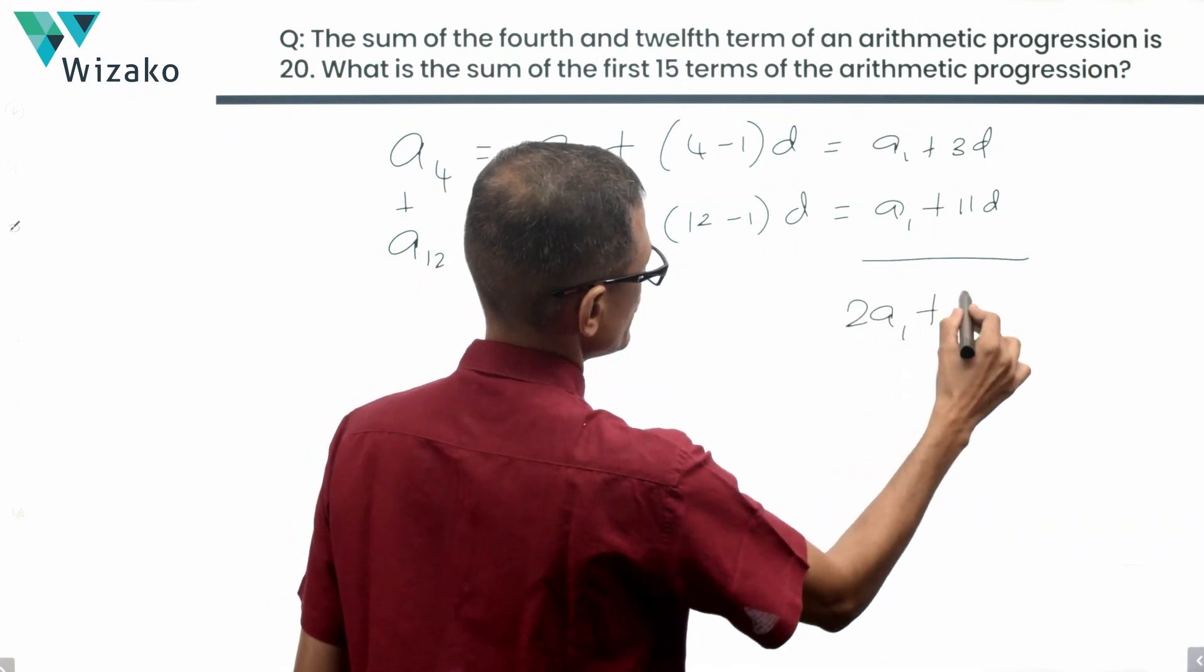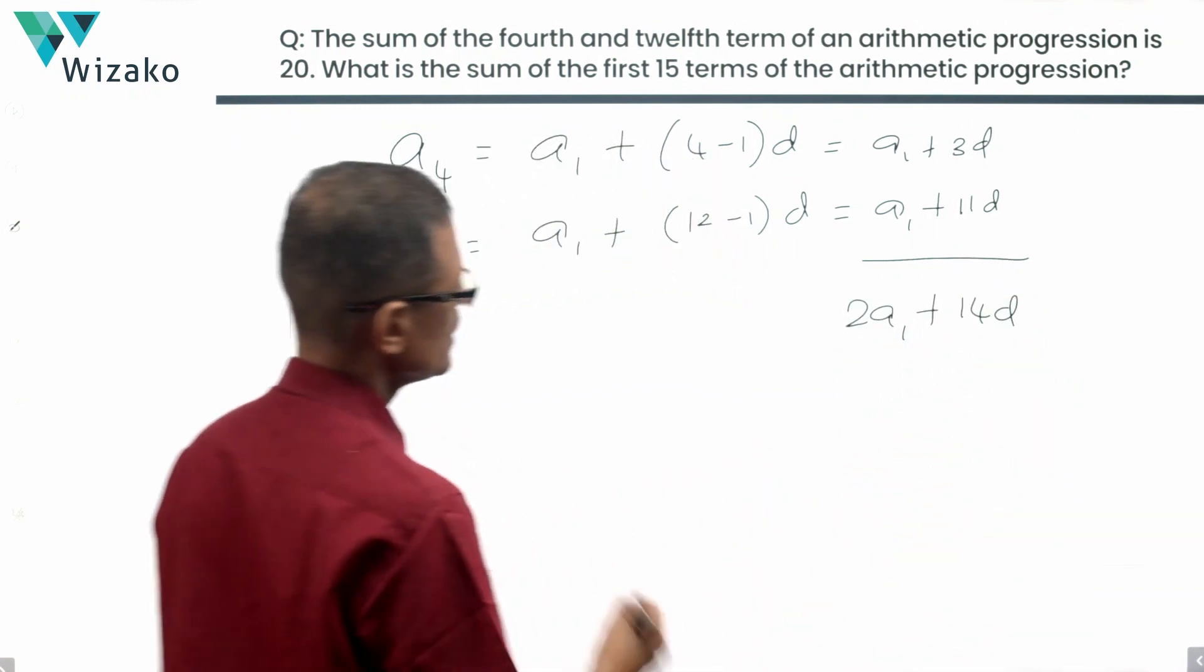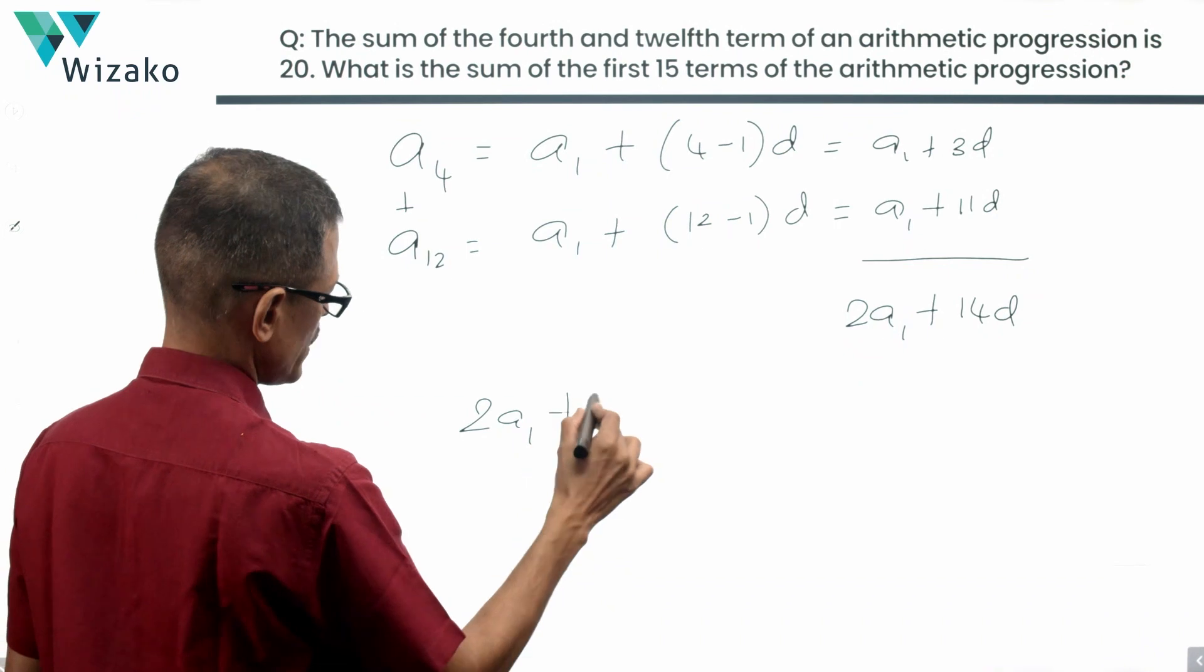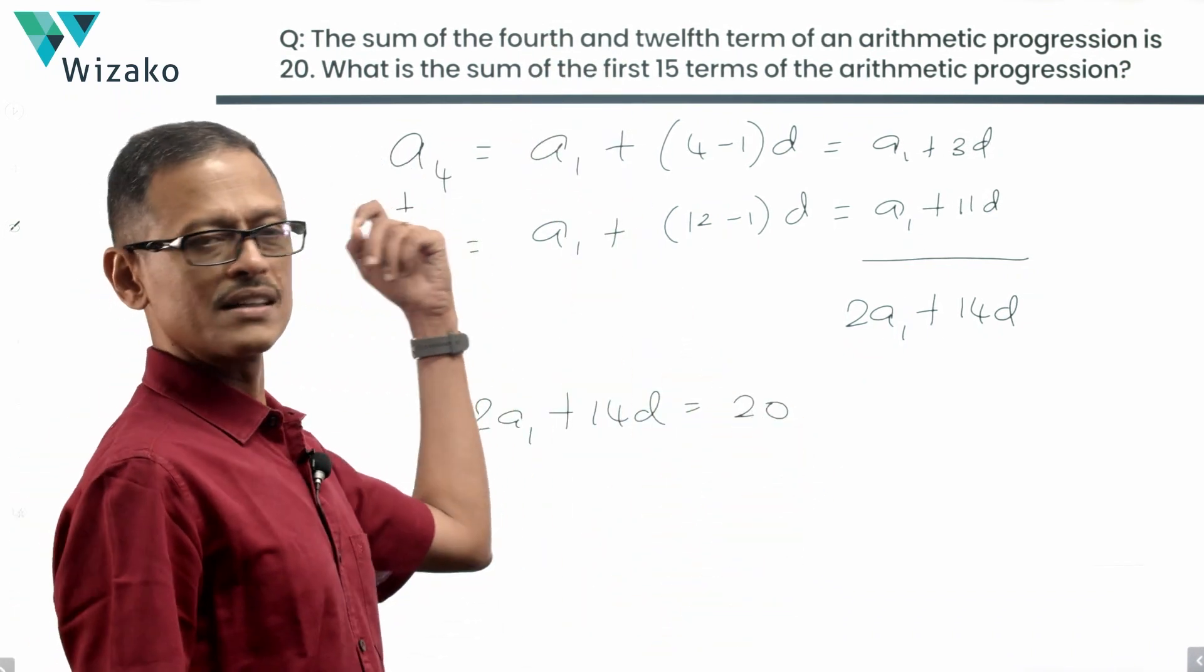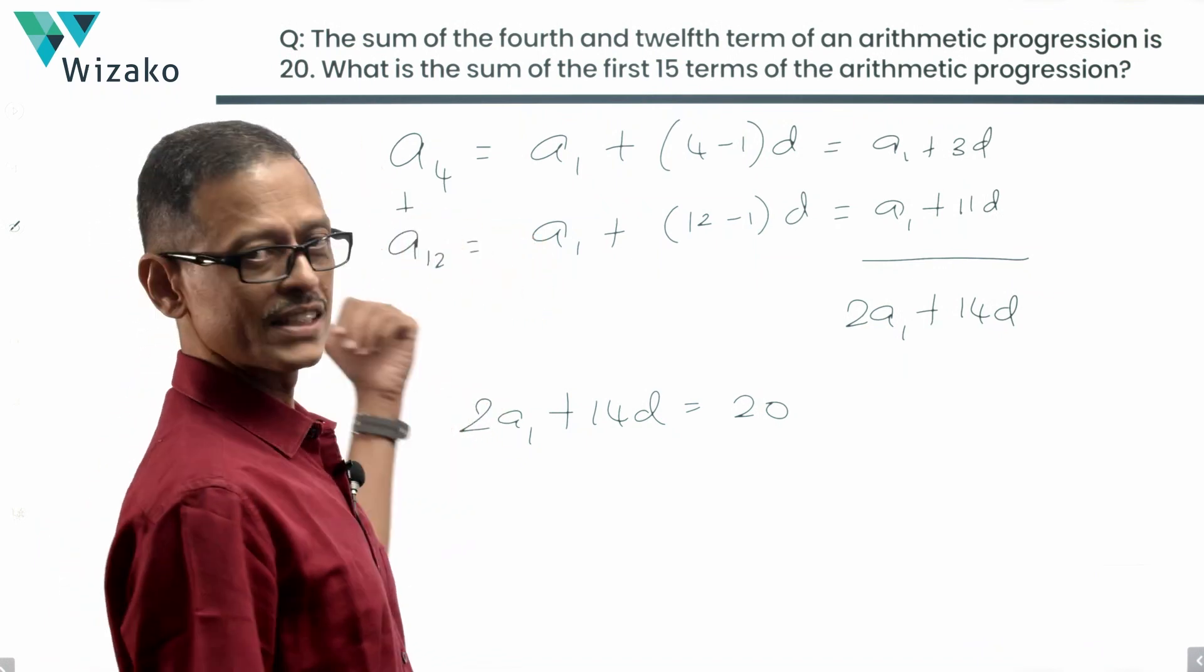This is going to leave us with 2A1 plus 14D. 2A1 plus 14D according to the question is equal to 20, which is the sum of the fourth and the twelfth term.